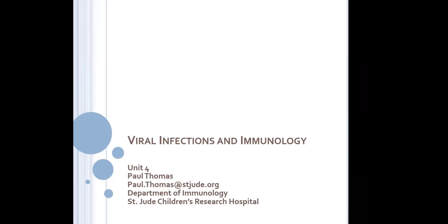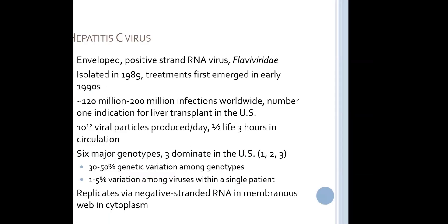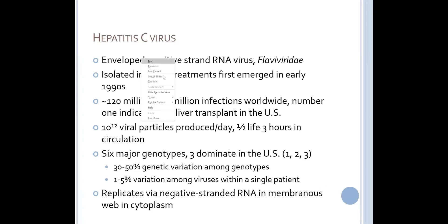Today we're going to be talking about a couple of different viral infections, the immune response, and how you model them. We'll go through relatively quickly, but there's plenty of time for additional sessions or discussions in the Slack about anything you want more details on. The first infection we're going to talk about, and that you'll do some models around in your exercises, is hepatitis C, which is an enveloped positive-strand RNA virus and a flavivirus. It was first isolated in 1989, and the first treatments emerged in the early 90s. What we're going to be talking about today are these first-phase treatments and how their mechanisms of action were determined for modeling.